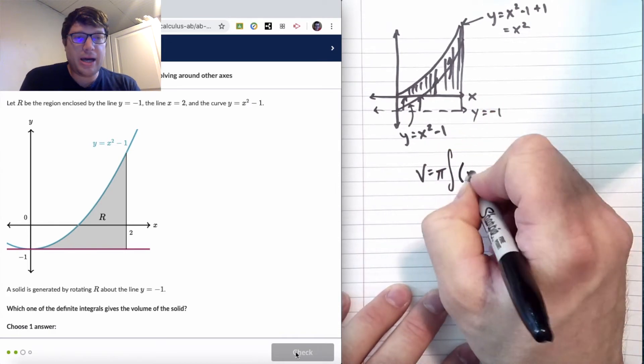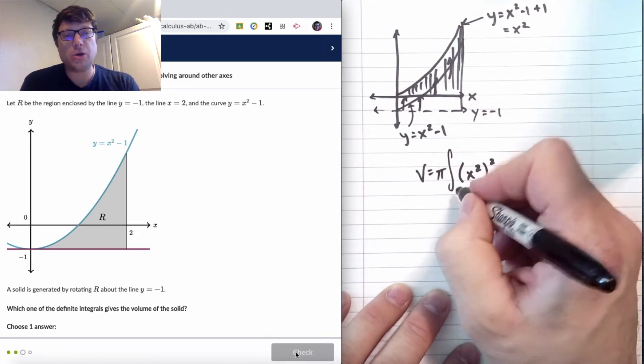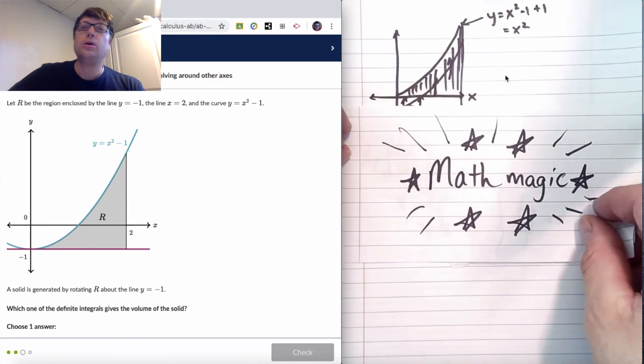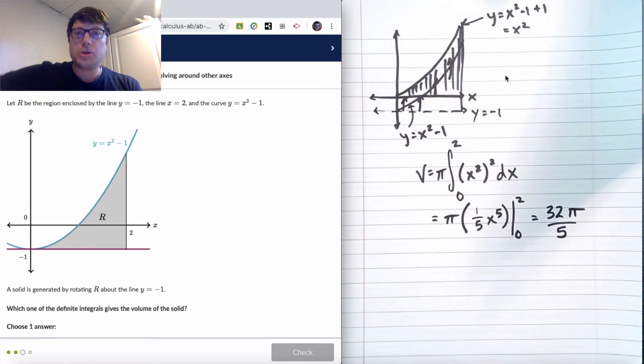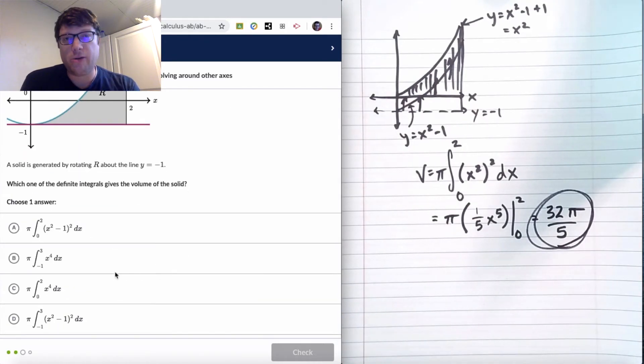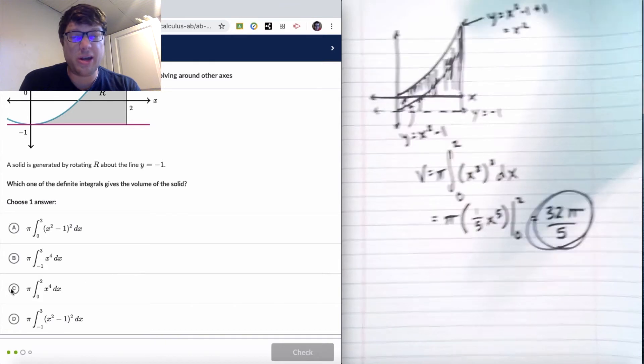Pi R-squared. Pi is a constant. We can take it out of the integral. And we're integrating from 0 to 2 of X-squared. R is squared. So X-squared must also be squared. X-squared squared. Math magic! 32 pi over 5. I should pause the video right here just to get that.